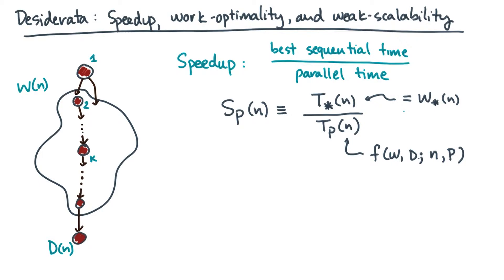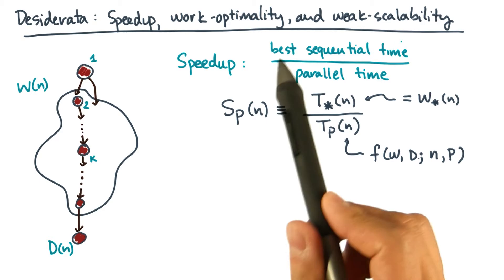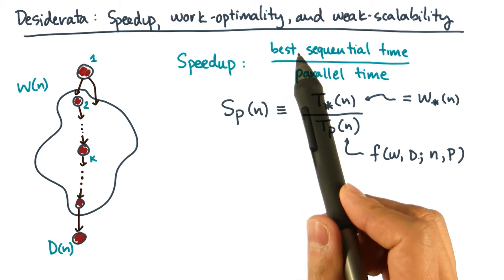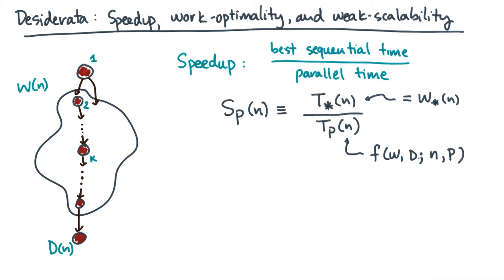Now, you might be wondering, why am I saying best sequential time? What's special about best? The answer is, I'm a good professor and I want to make it hard to cheat. After all, you can always make speedup artificially large by choosing a terrible baseline. If any of you are into marketing, you know what I'm talking about.